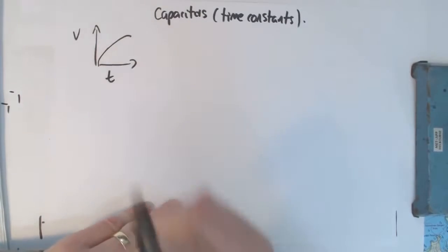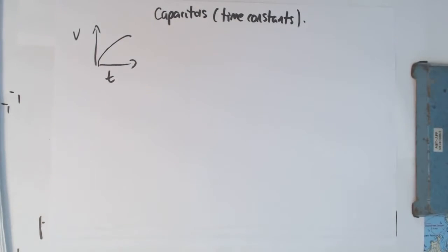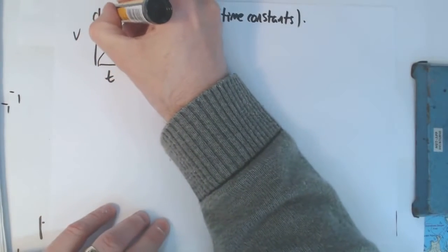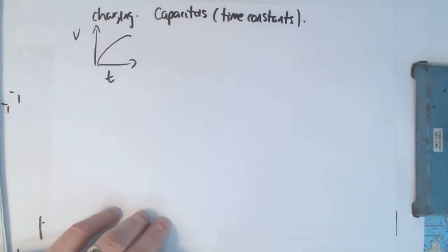This is voltage against time. This is the one you really need to remember. It will help you. There's going to be four graphs we need to know about for capacitors and four for inductors. This is the only one you need to remember.